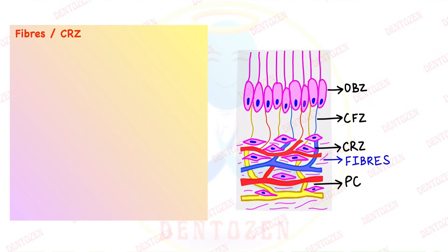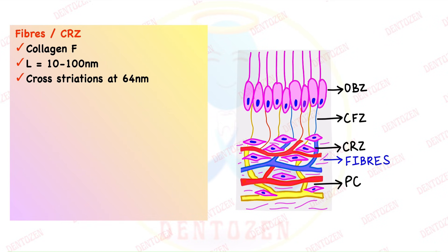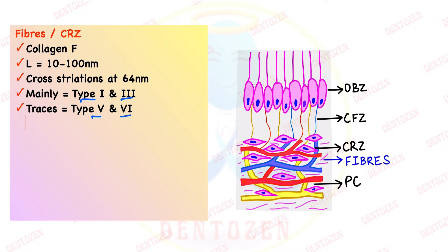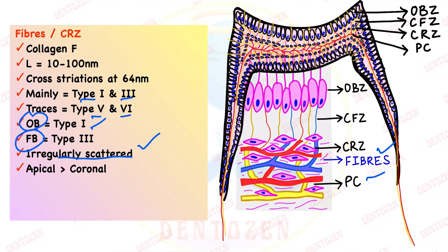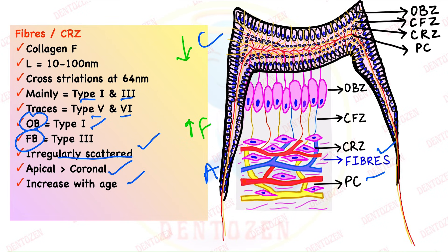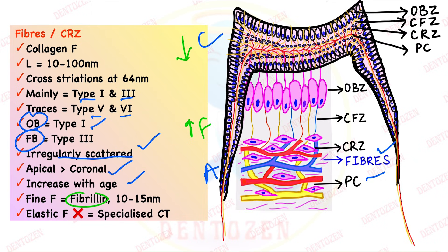Fibers in the pulp are mainly collagen fibers seen in the cell-rich zone, with a diameter of 10 to 100 nanometers and cross-striation at 64 nanometers. There are mainly type 1 and type 3 collagen, with traces of type 5 and 6. Odontoblasts produce type 1 and fibroblasts produce type 3, irregularly scattered throughout the pulp. They are more numerous in the apical region than the coronal region, and their number increases with age. Cells decrease with age while fibers increase. Fine fibrils of fibrillin can also be seen; elastic fibers are not seen in the pulp — that is why it is called specialized connective tissue.